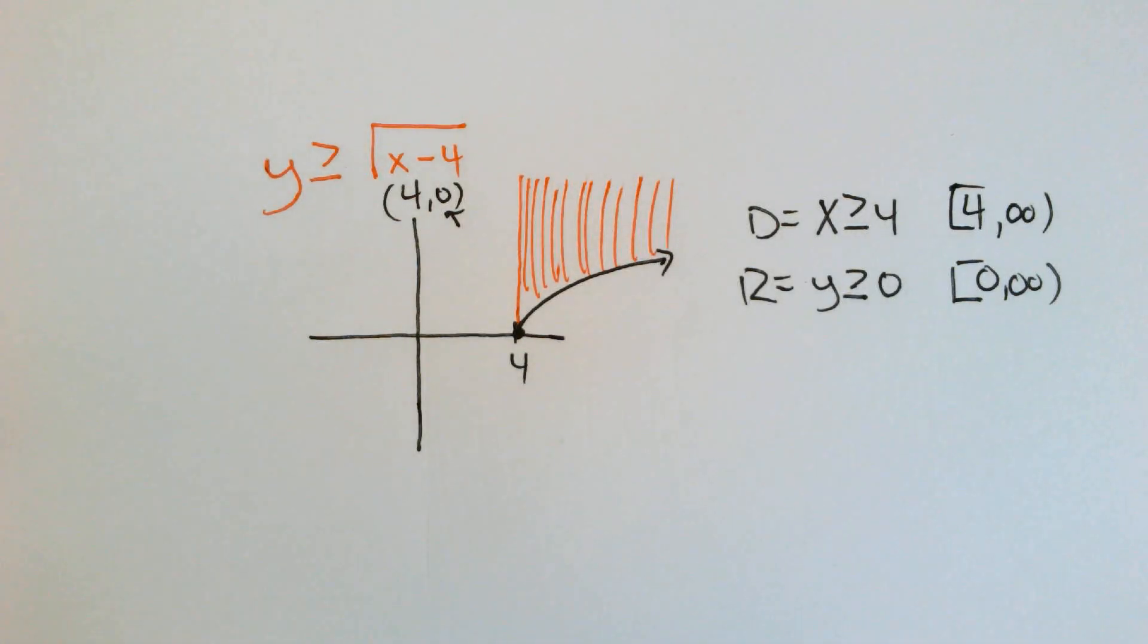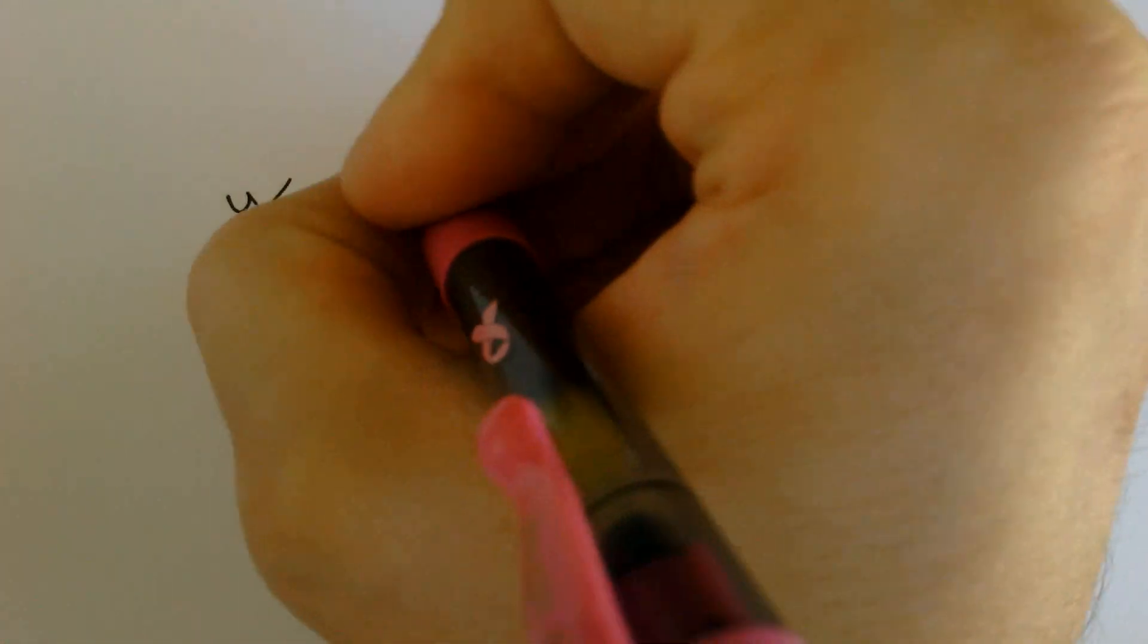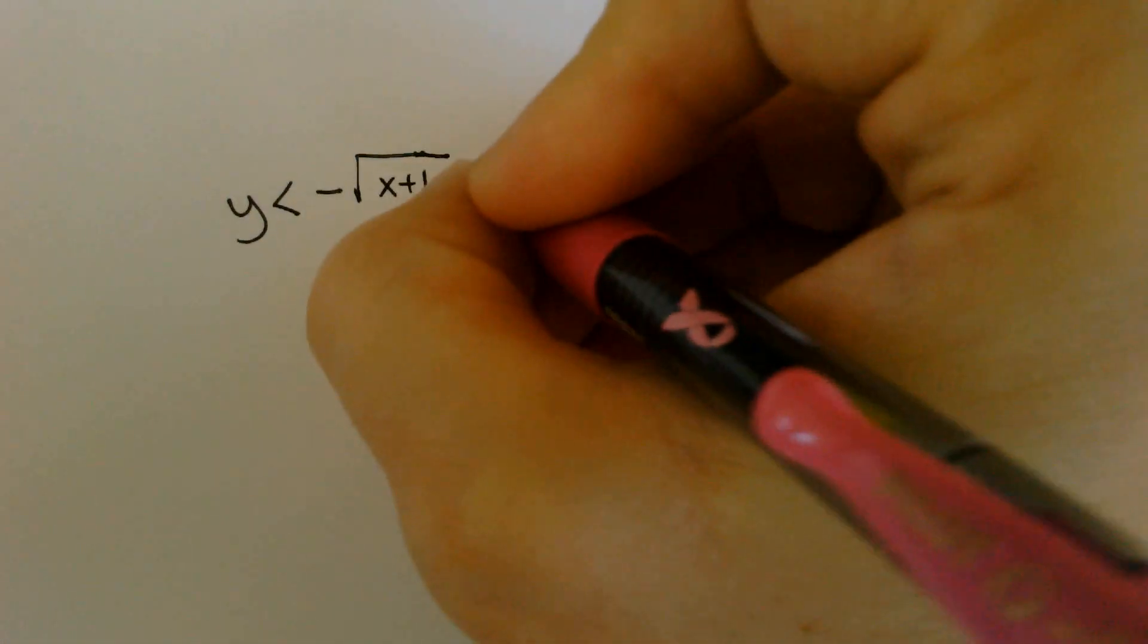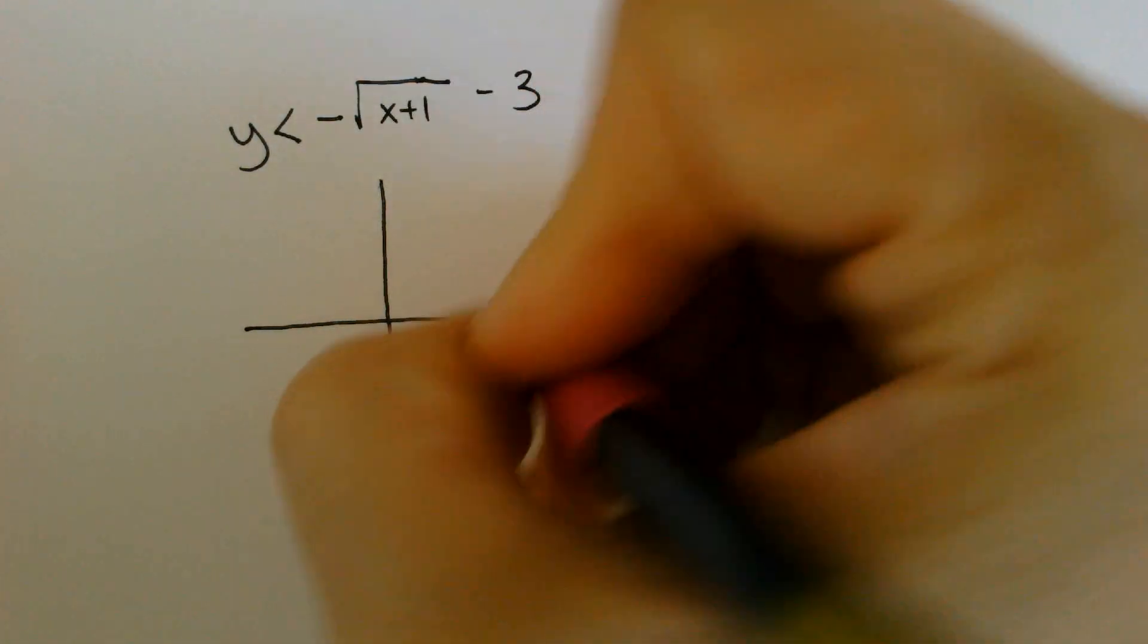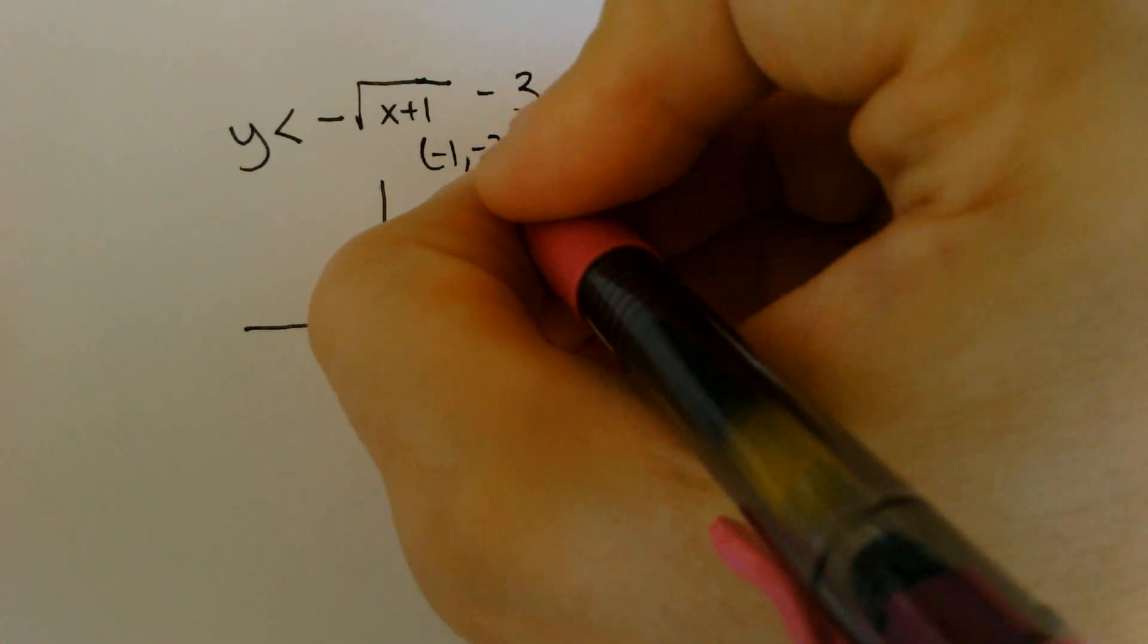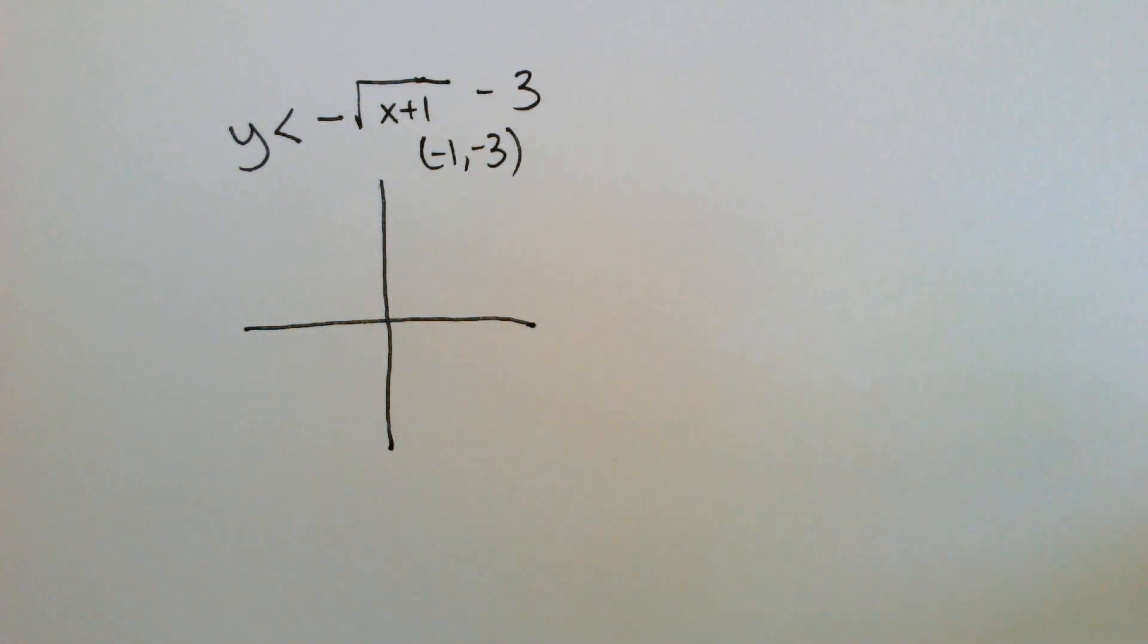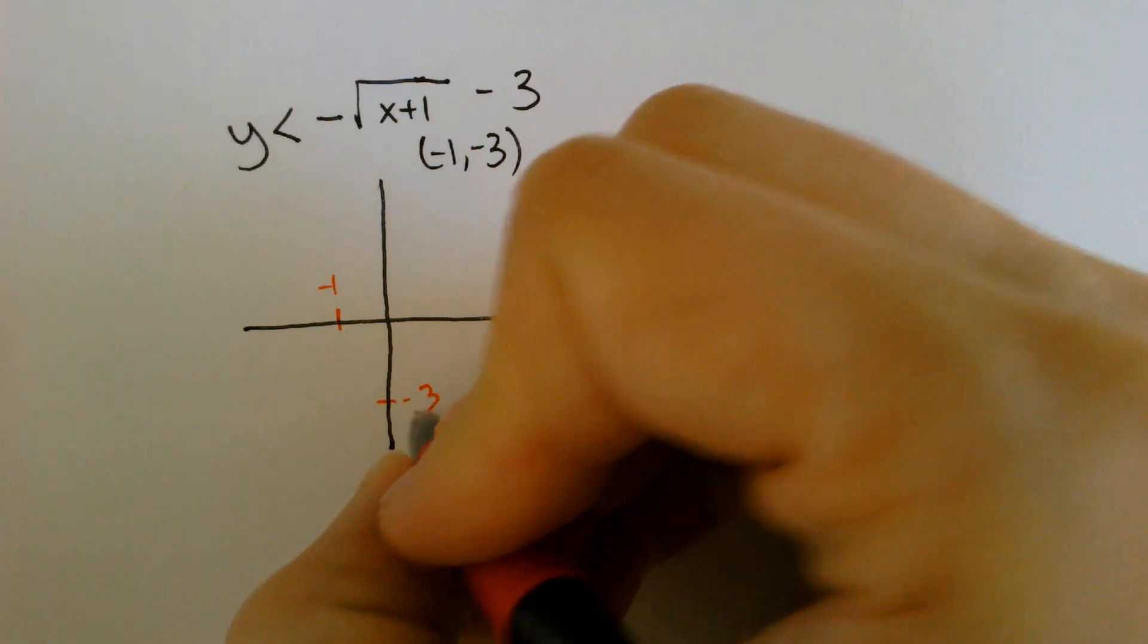All right, we got one more, and then we're done. Let's do one more. Here we go. Let's say we have y is less than a negative square root of x plus 1 minus 3. Change the sign, keep the sign, negative 1 comma negative 3.